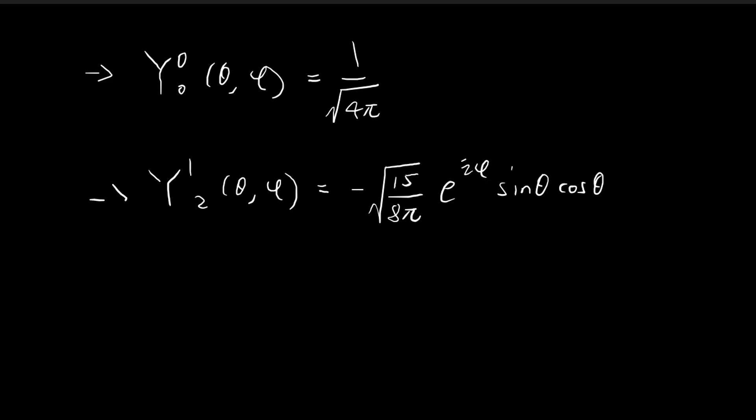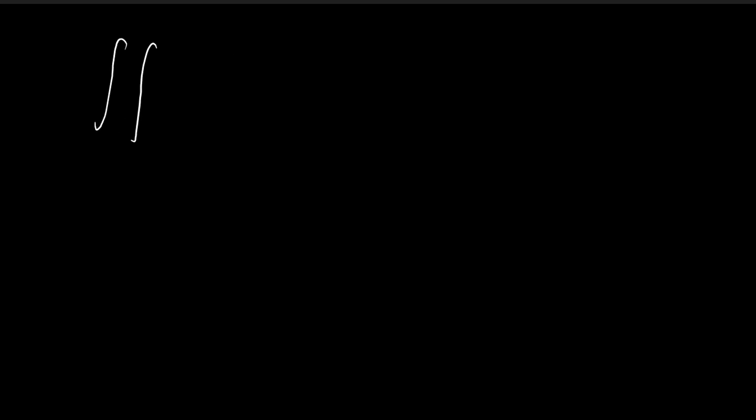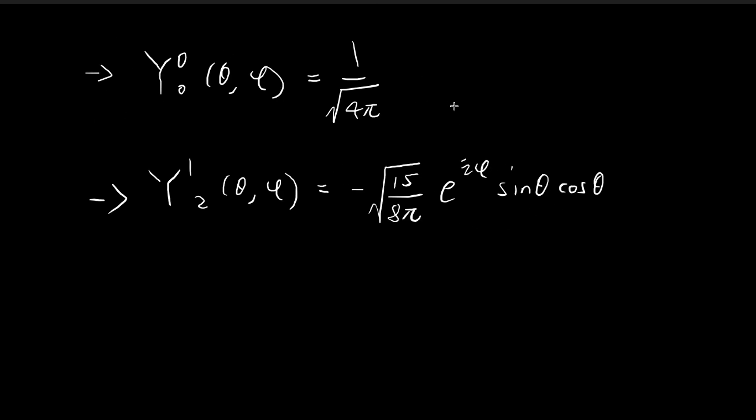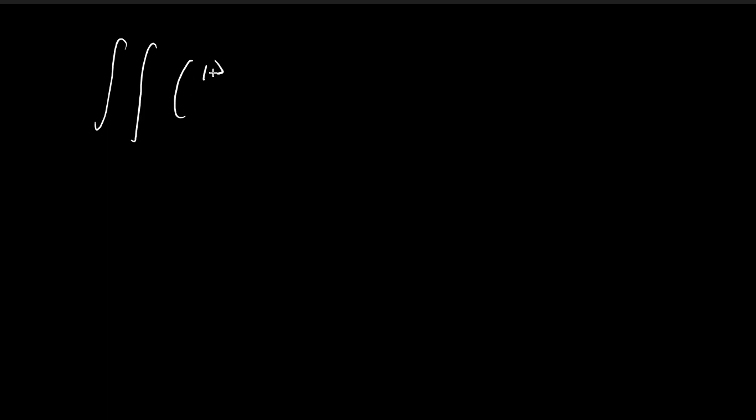And now we're going to do the same thing for this other function, y1,2. And so we do something similar. We have the double integral, and then we need to take the absolute value square. When we take the absolute value square, this term goes away because the absolute value square is just the conjugate multiplied by itself. And so you'll get something like this, which cancels out, because the product of these two terms is equal to 1. So when you take the absolute value square of this, the negative sign also goes away. So then you have 15 over 8 pi.